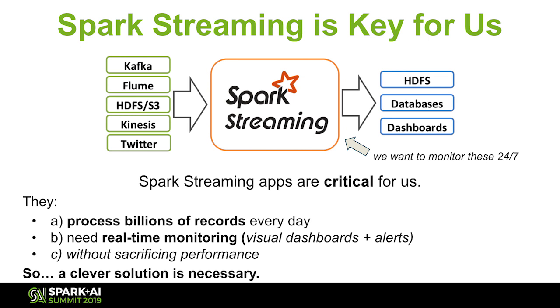We ingest 20 terabytes a day before replication, and our record ingestion rate is easily over 100 million per minute. We see thousands of apps on Yarn each day — a lot of those are ad hoc user queries, and a handful of Spark streaming apps that we run 24/7 to serve a variety of customers and application needs. The magic of our system uses Spark streaming pretty heavily. We need to be able to process billions of records and have real-time monitoring with both alerts and visual dashboards, all without sacrificing performance.